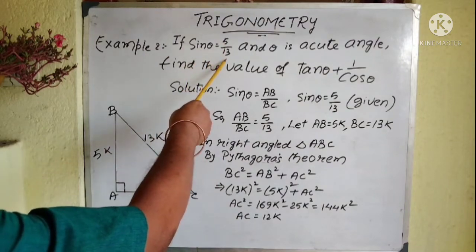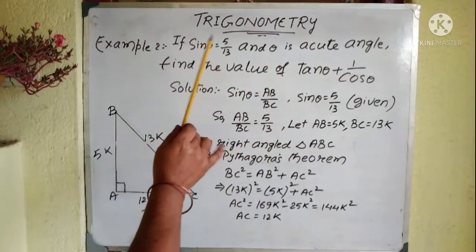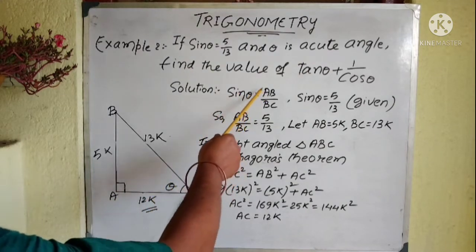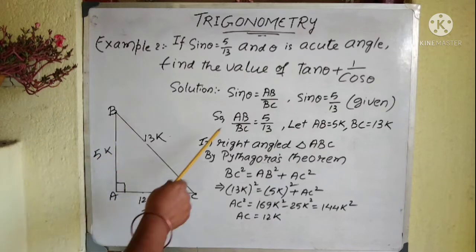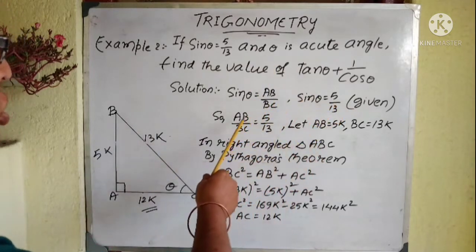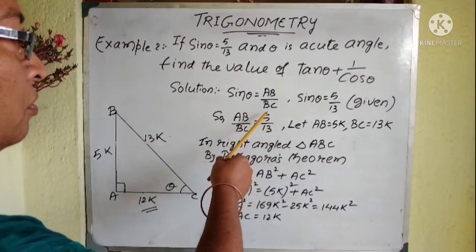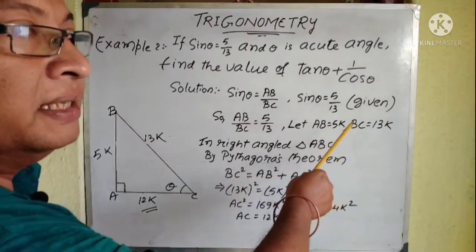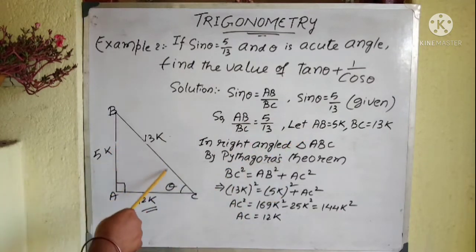Another example: If sine theta equals 5 by 13 and theta is an acute angle, find the value of tan theta plus 1 by cos theta. Draw the triangle — ABC is a right angle triangle, right angled at A, and theta is the angle at B. Sine theta equals AB by BC equals height by hypotenuse equals 5 by 13. As this is a ratio in simplest form, let AB equal 5k and BC equal 13k.